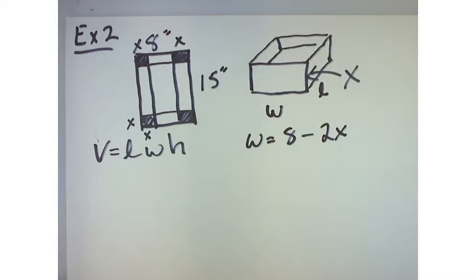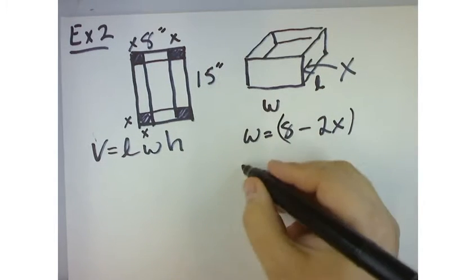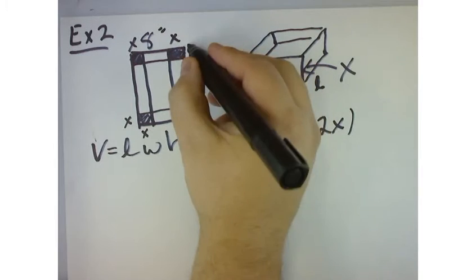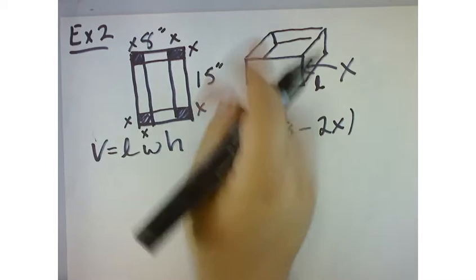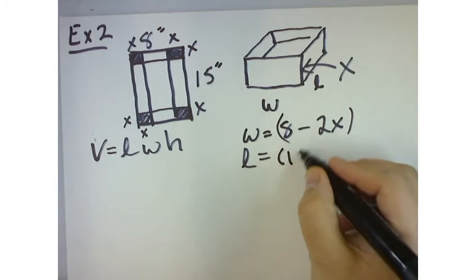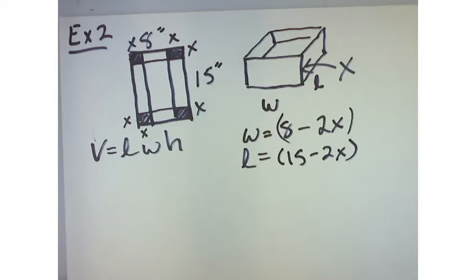Now, I don't know what the length of x is, but that is what the width of this is. Now, what is the length of the box? Well, it's 15 from here to here, but I'm subtracting what from it? 2x. And then what is the height of the box?